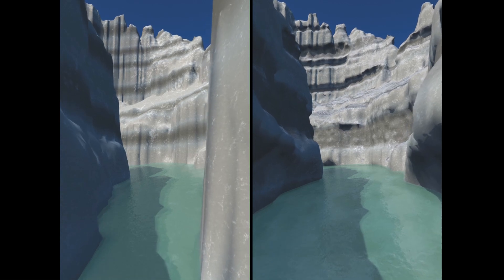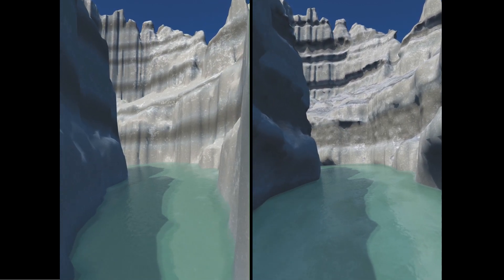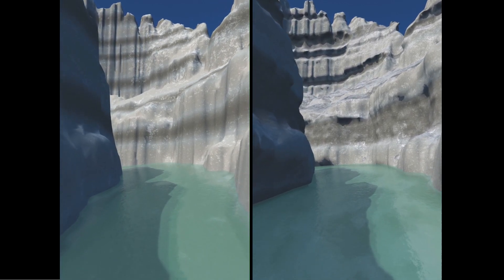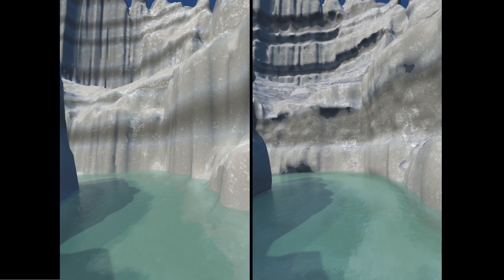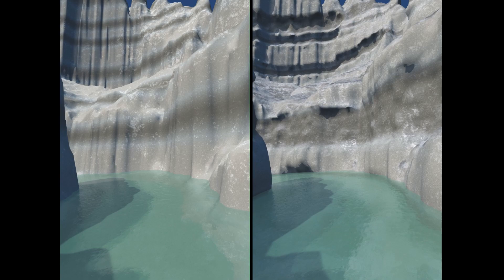Here, we compare an original DEM from the Zion National Park with a version amplified using our technique. Extra features include overhangs, stratified erosion, and the carving of the riverbed.